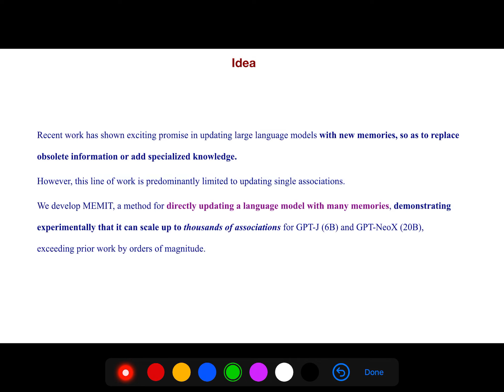However, this line of work is predominantly limited to updating single associations. They developed MEMIT, a method for directly updating a language model with many memories, demonstrating experimentally that it can scale up to thousands of associations.